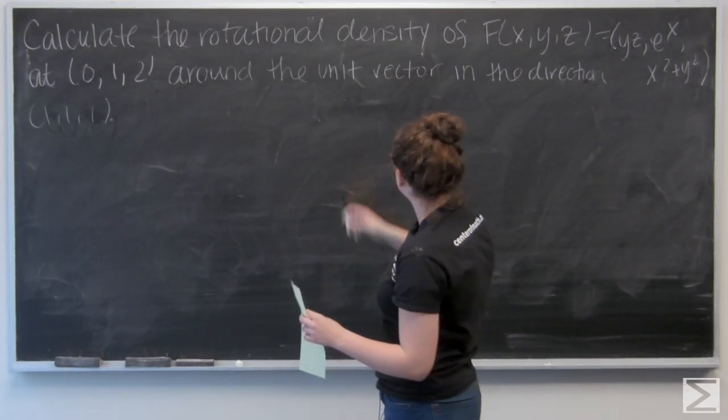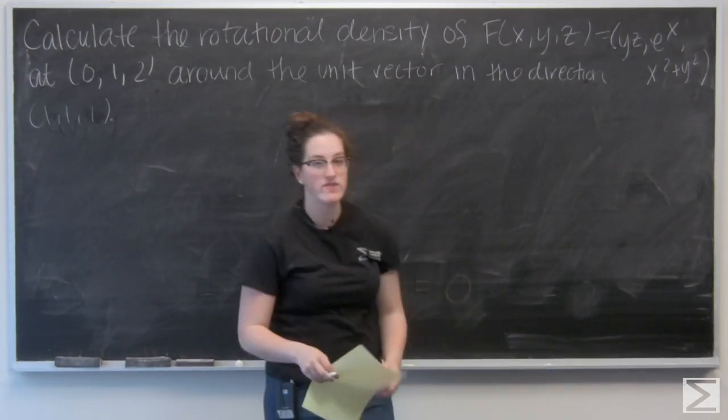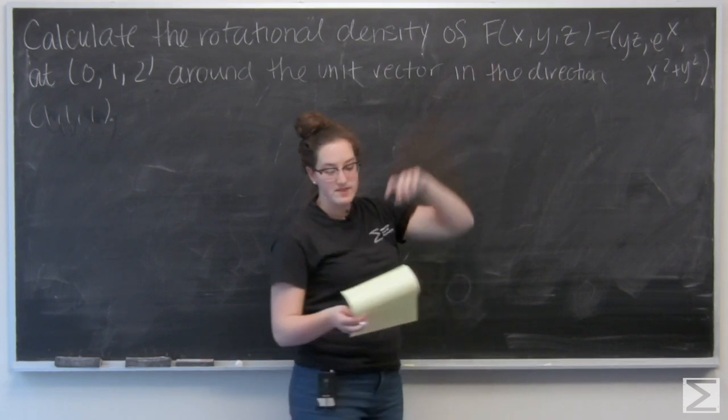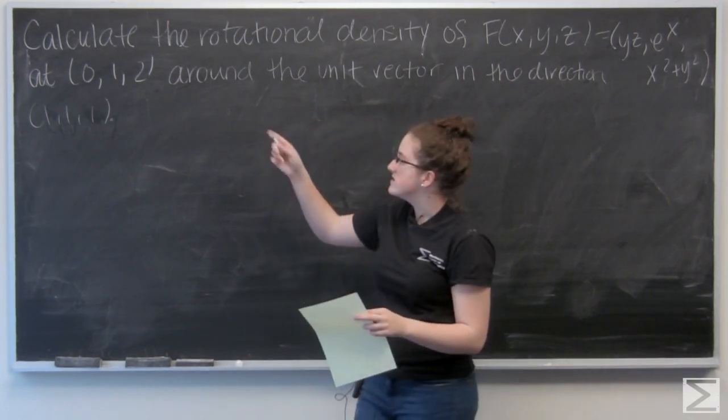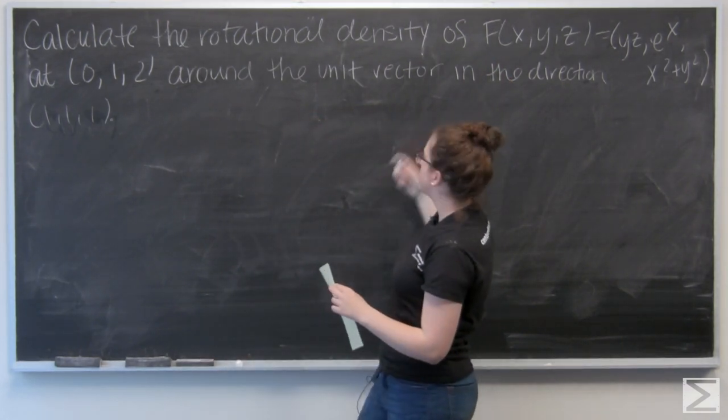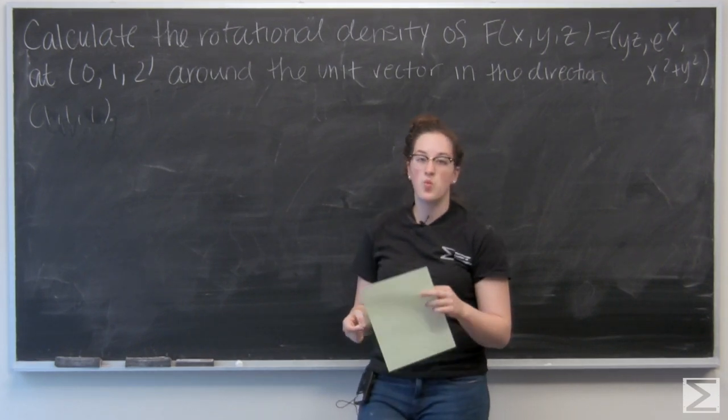This question asked me to calculate the rotational density of this given vector field f of x, y, and z at the point (0, 1, 2) around the unit vector in the direction of (1, 1, 1).